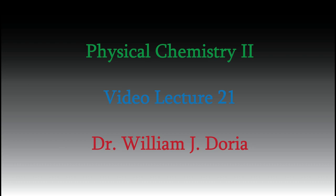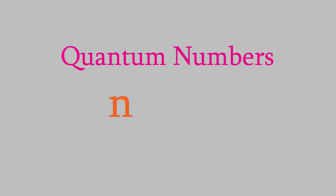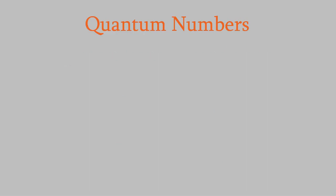Hi, and welcome again to my series of videos for Physical Chemistry 2. In the last video, we completed our understanding of the quantum numbers an atom can have — n, l, m, and s. Today, I want to start talking about some of the consequences of those quantum numbers.